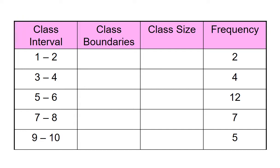For example, for the first class interval, the lower boundary is the midpoint of 0 and 1, which is 0.5. And the upper boundary is the midpoint of 2 and 3, which is 2.5. For the second class interval, the lower boundary is the midpoint of 2 and 3, which is 2.5, and the upper boundary is the midpoint of 4 and 5, which is 4.5 — so we have 2.5 to 4.5. The same goes for the rest of the class intervals.